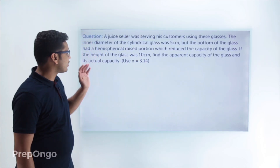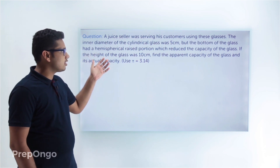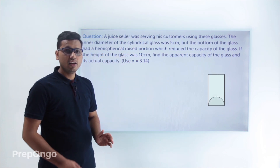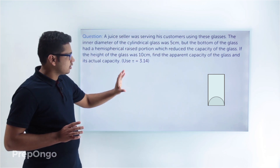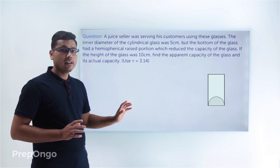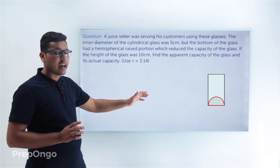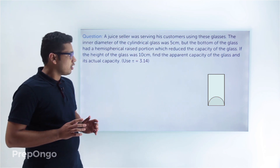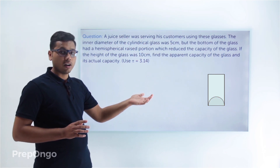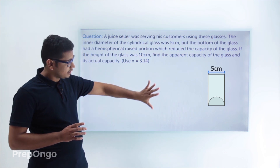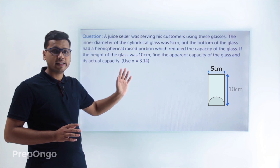Let's have a look at this question. A juice seller was serving his customers using these glasses. The glass is in the form of a cylinder and has a raised hemispherical portion which reduces the capacity of the glass. The diameter of this cylindrical glass is 5 centimeters and its height is 10 centimeters.